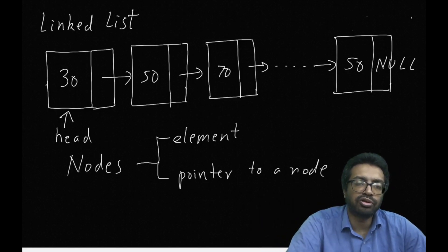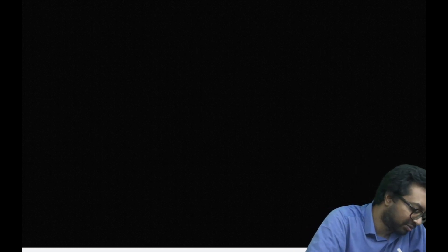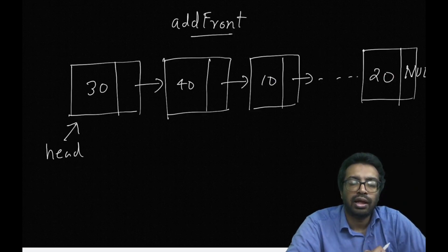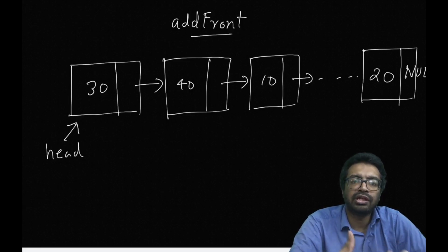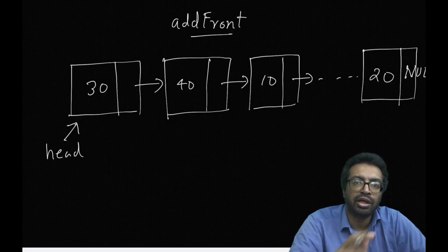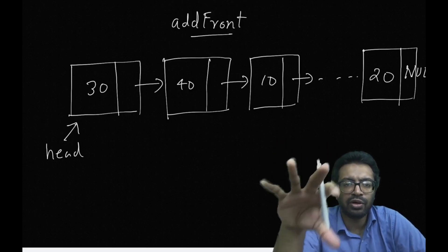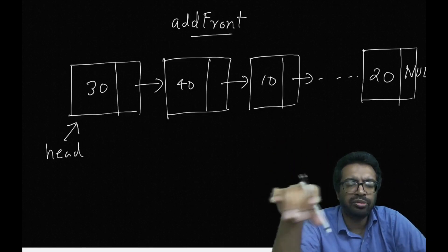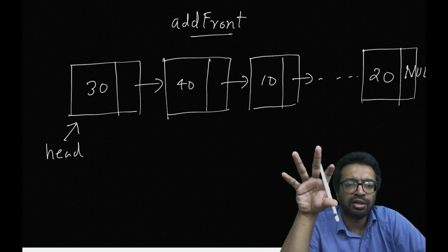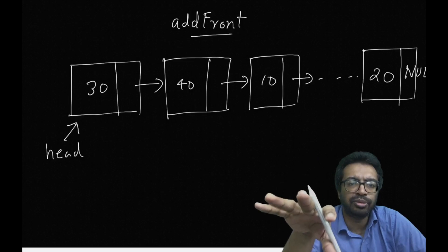The head pointer points to the front of the list. Now we are going to look at how to add an element to the front of the linked list. Let's say this is our current list and I want to insert a new element — let's call it 100 — into this list. I want to add this new number 100 at the front of the list, so there should be a node with the value 100, and head should be pointing there.